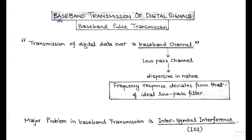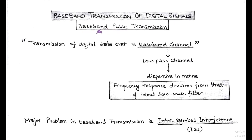Welcome friends. Our next topic is Baseband Transmission of Digital Signals, or Baseband Pulse Transmission. In this method, the digital data is transmitted directly over the channel without any modulation. We can say that the digital data is transmitted without using a carrier signal, hence called Baseband Channel.